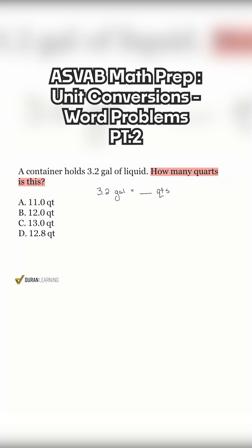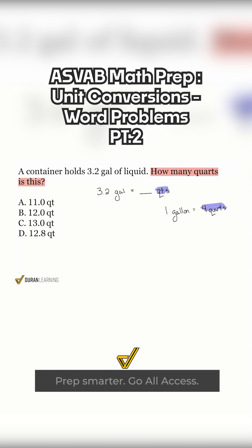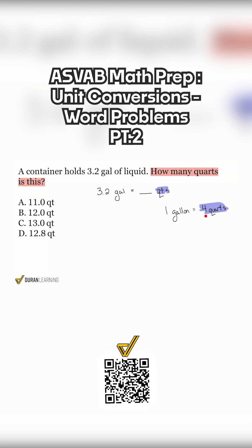So what we need to know is that one gallon equals four quarts. Four quarts makes one gallon. So my party people, we are trying to get to quarts. So because we're trying to get to the unit that has the number on it, we will perform what operation? Because we're trying to get to that unit with the number on it. Yeah, we're going to multiply.